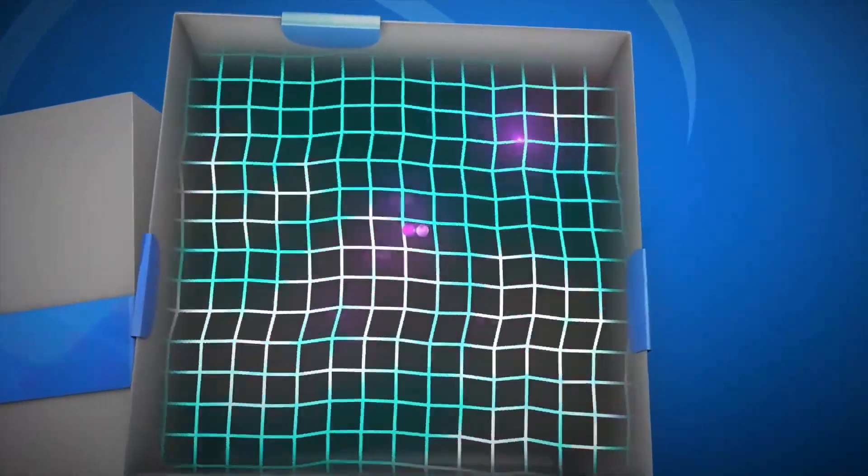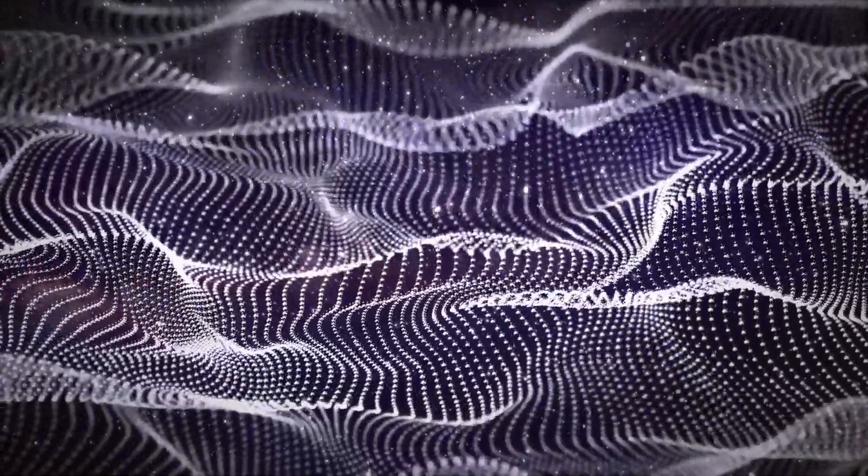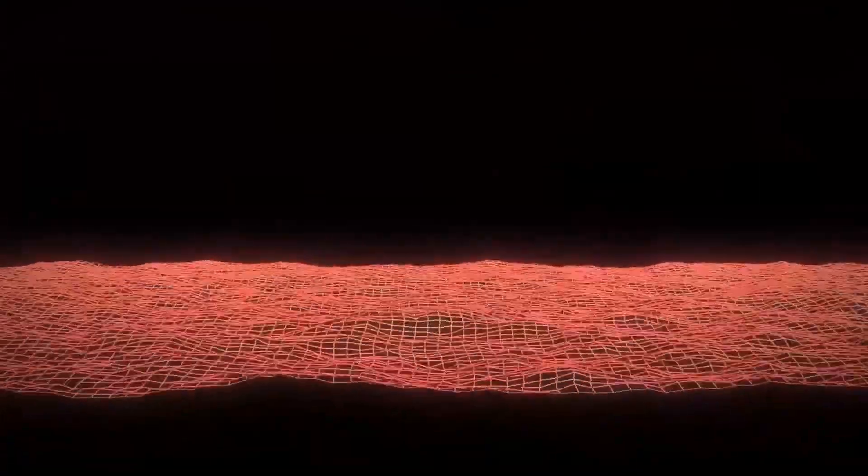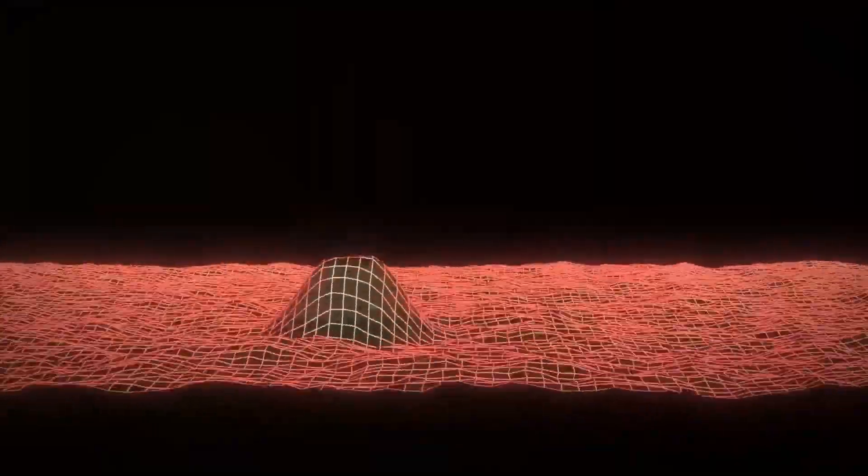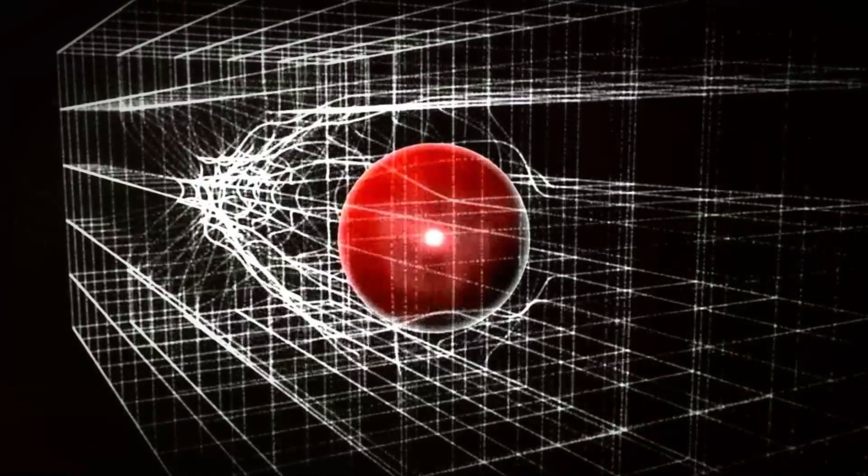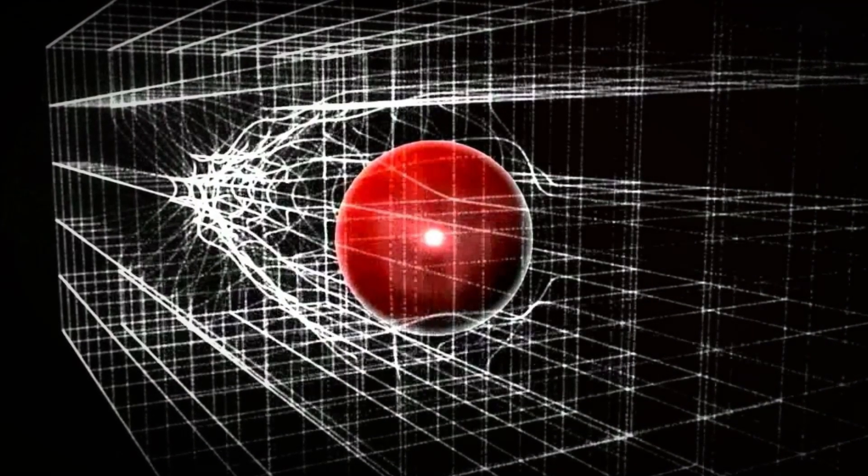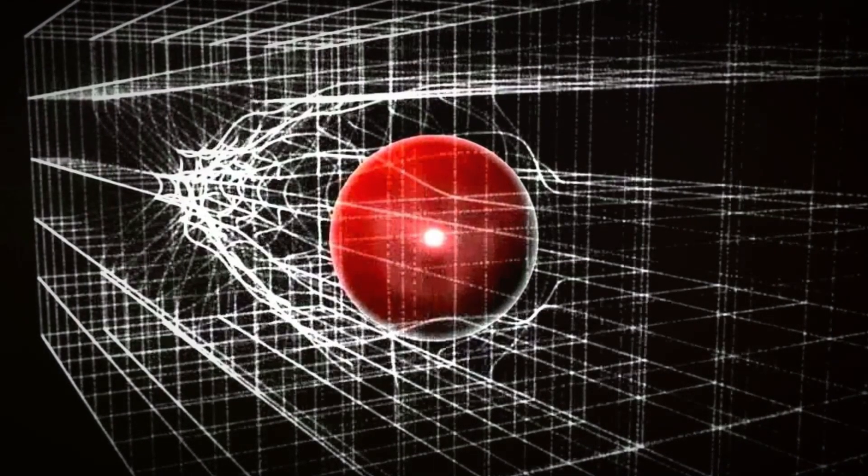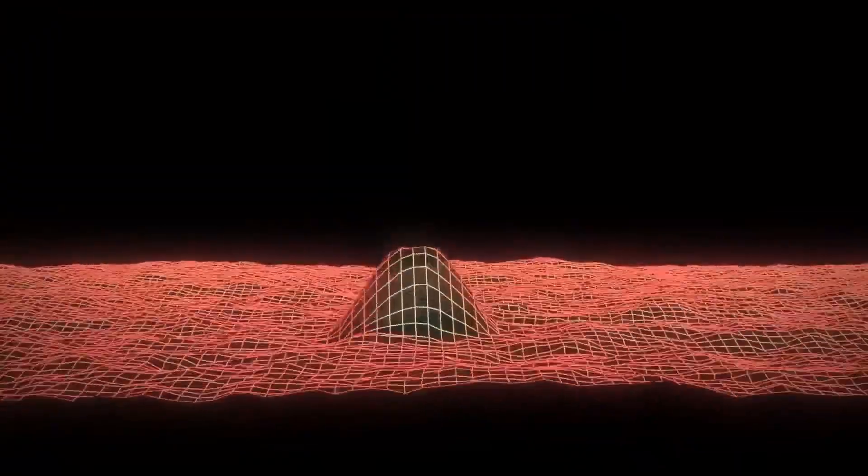On the other hand, envision electrons and quarks as casual swimmers, creating more splashes and waves as they interact more with the Higgs field, thus acquiring mass. Heavier particles, represented by an inflatable beach ball, interact substantially with the Higgs field, explaining their significant mass.